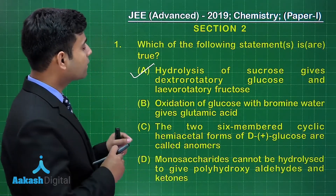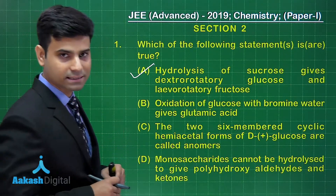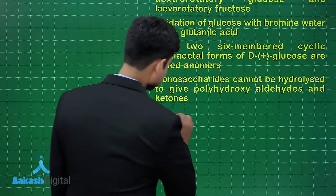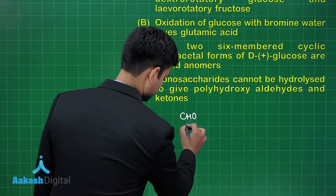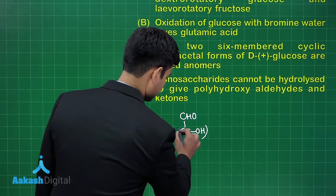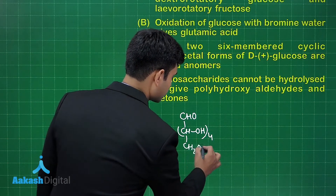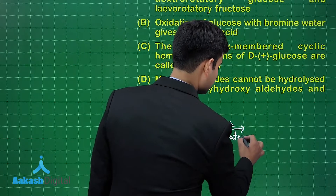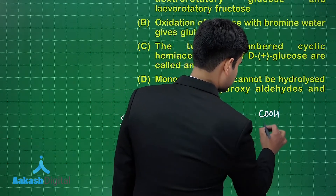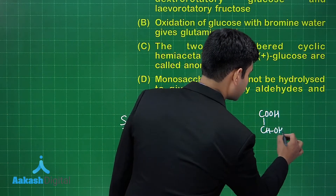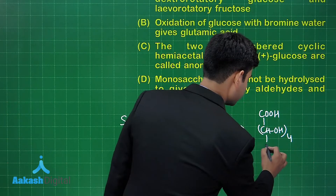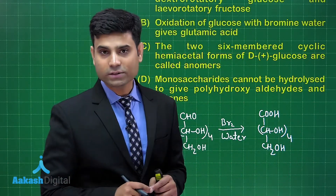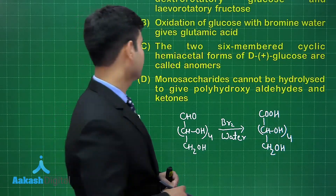Now option B says oxidation of glucose with bromine water gives glutamic acid. Let's write the reaction. Glucose on reaction with bromine water gives gluconic acid. BR₂ water will oxidize the CHO group only, giving gluconic acid, not glutamic acid. So option B is not right.